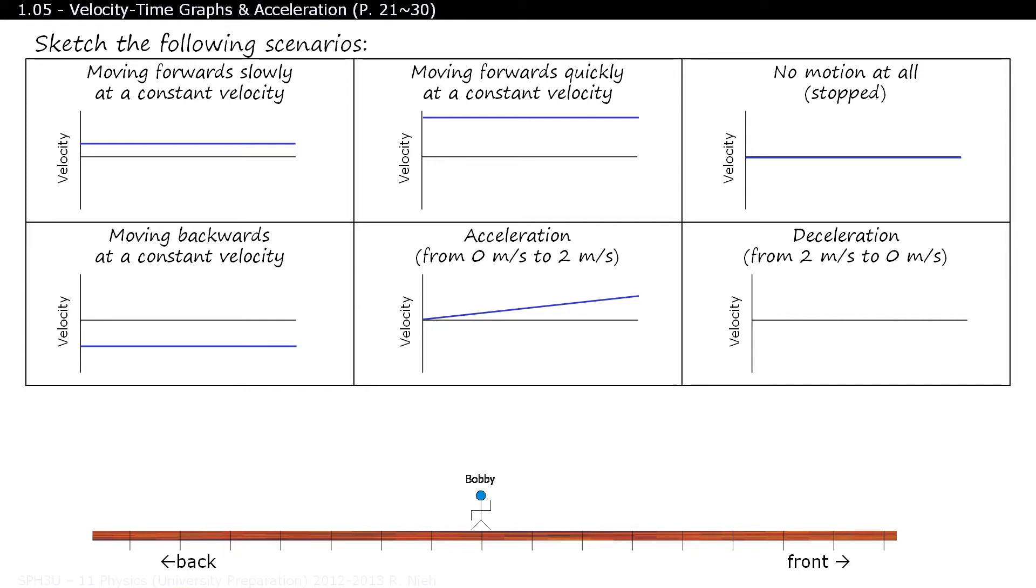One more, Bobby. Can you run and come to a stop? We see that the plot starts off with a positive value, but over time the value drops to 0, and that's when Bobby has come to a stop. Good job Bobby, but we're not quite done yet.